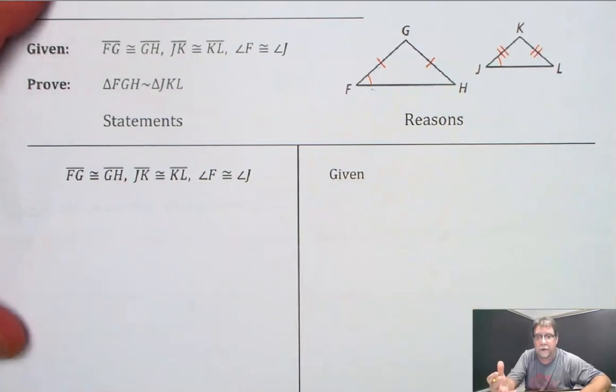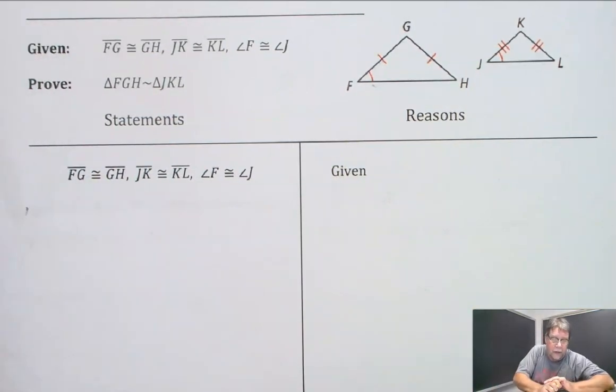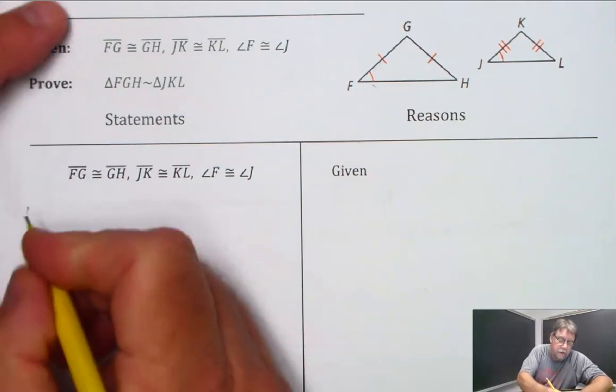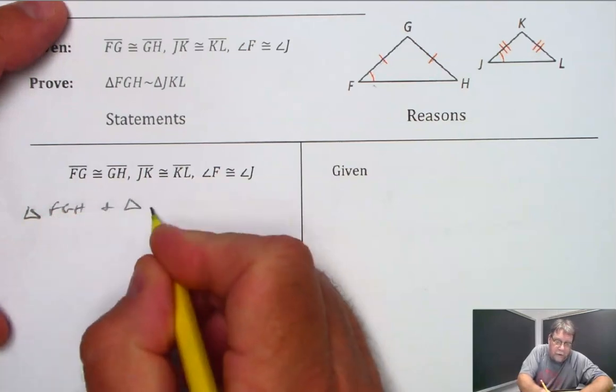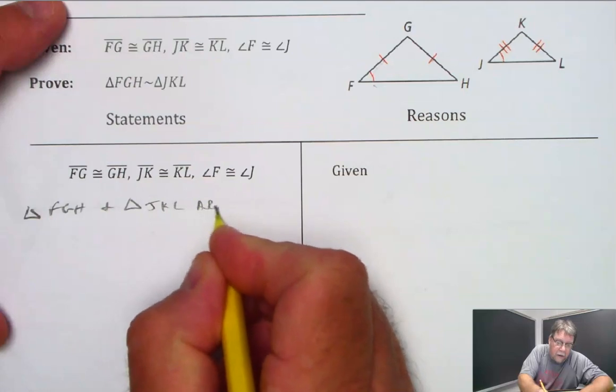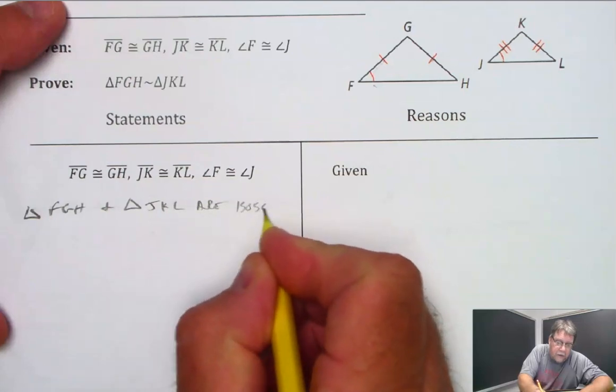So first of all, I've got to say that they're isosceles. Triangle FGH and triangle JKL are isosceles, all right?